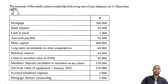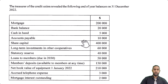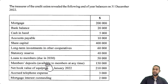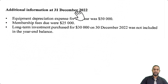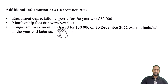Now part B. The treasurer of the credit union reveals the following end-of-year balances on 31st December 2022: mortgage, bank balance, cash in hand, accounts payable, share capital, long-term investments in other cooperatives, statutory reserve, loans to members due in 2030, members deposits available at any time, net book value of equipment at 1 Jan 2022, and accrued telephone expense and mortgage interest. Additional information: depreciation expense for the year was $50,000, membership fees due $25,000, and a long-term investment purchased for $30,000 on 30th December was not included in the year-end balance.